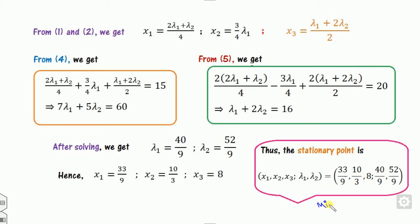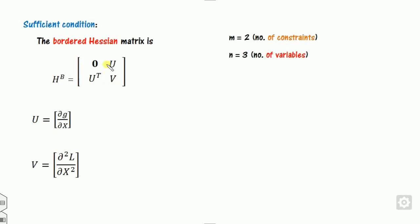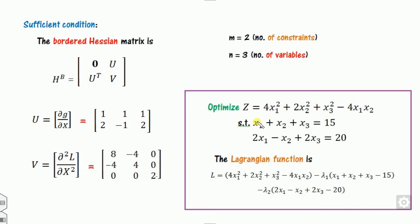To check whether this stationary point is a maximum or minimum, we calculate the bordered Hessian matrix. Again M = 2 and N = 3, so it is 5×5. The U matrix entries come from partial derivatives of the constraints: the values are 1, 1, 1, 2, -1, and so on. Remember, if for example the constraint involves x2², then the derivative would be 2x2, and so on.